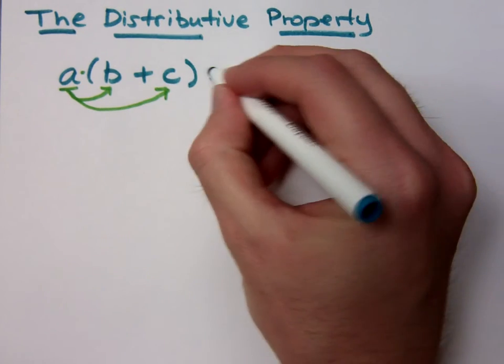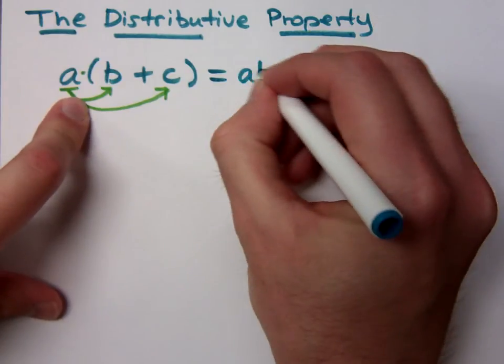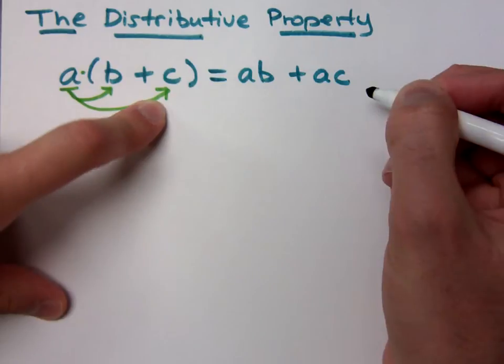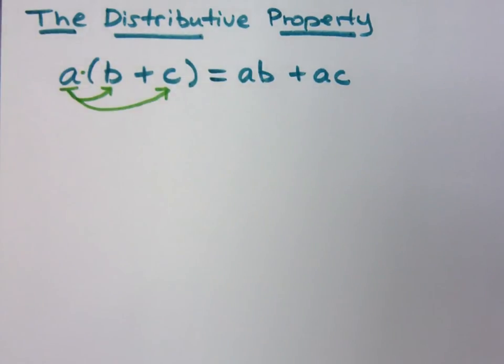So when I distribute here, I get a times b, and I get a times c. That's the distributive property. I think we've seen this before.